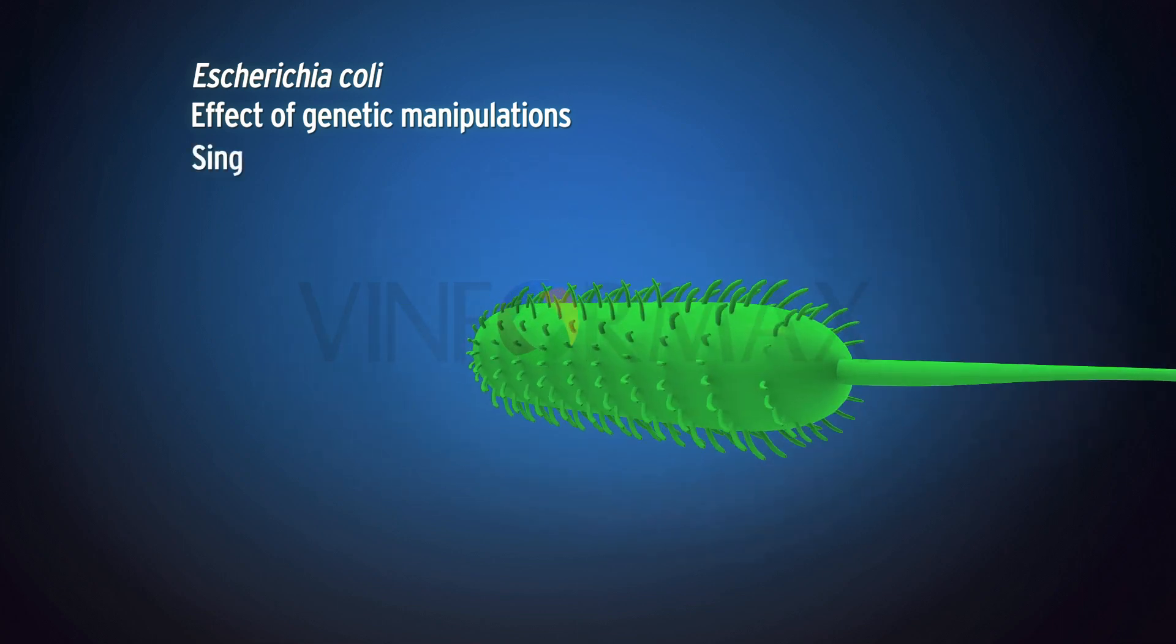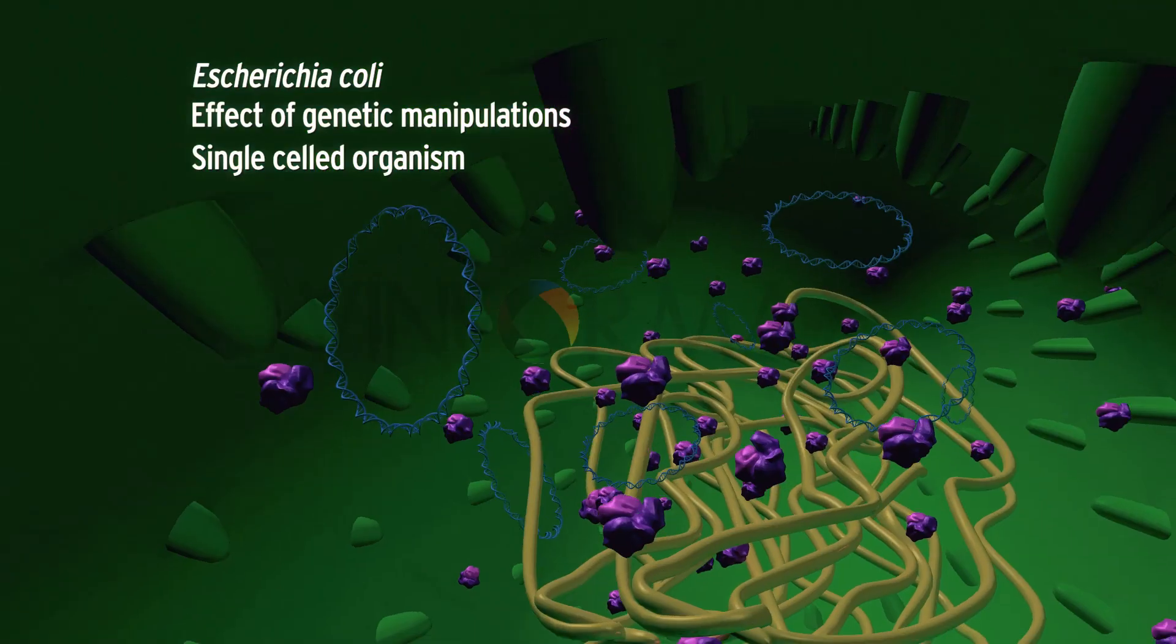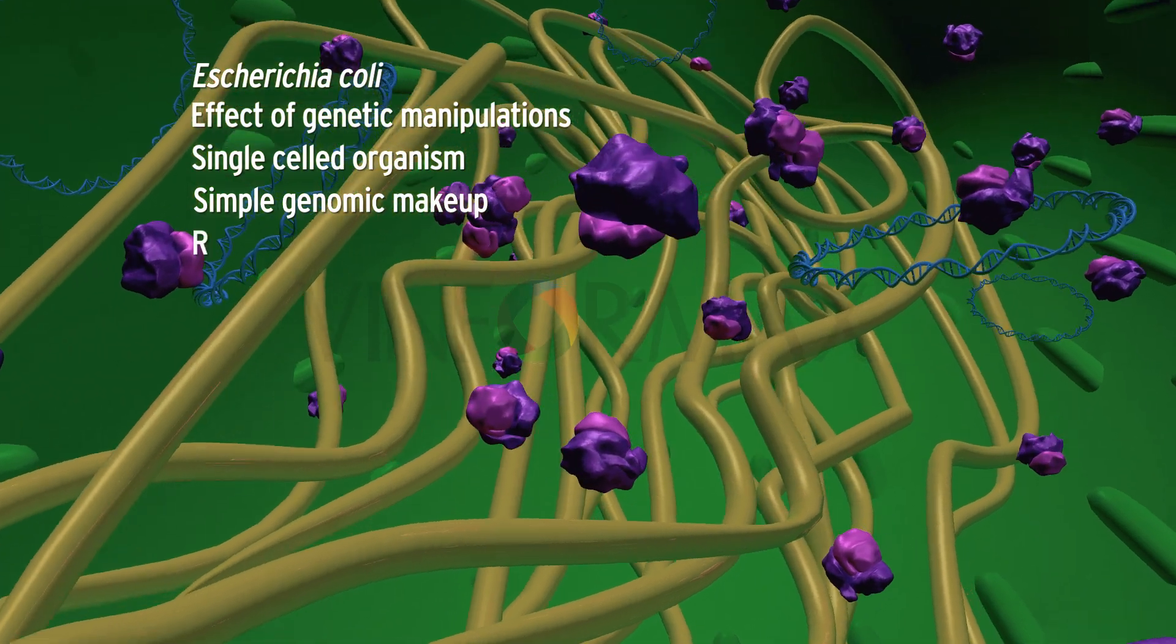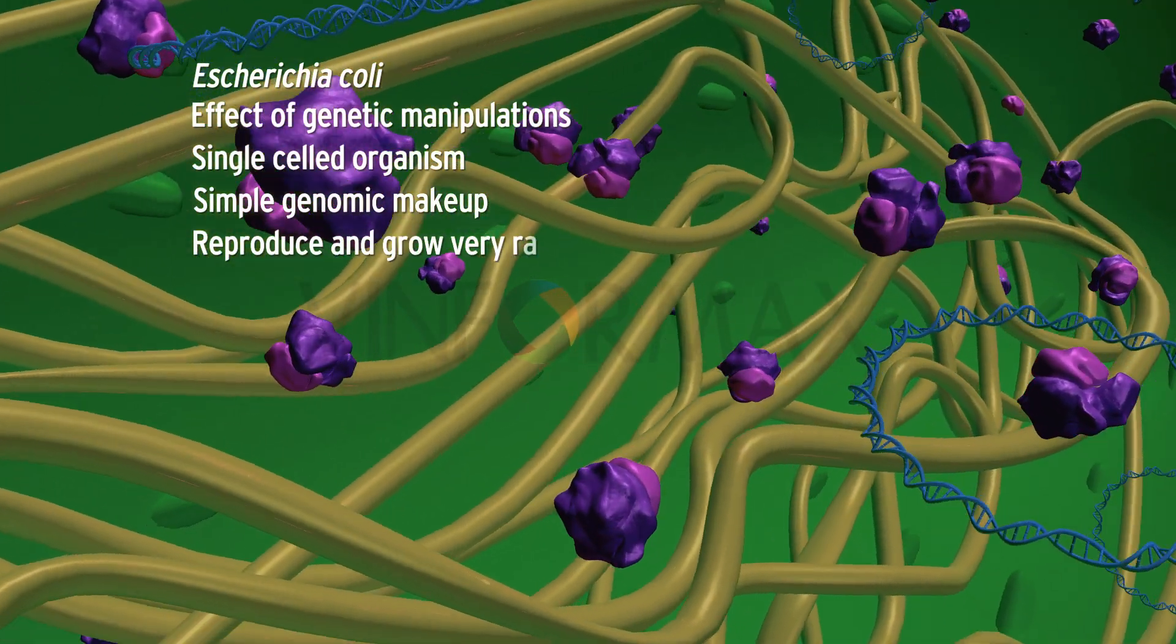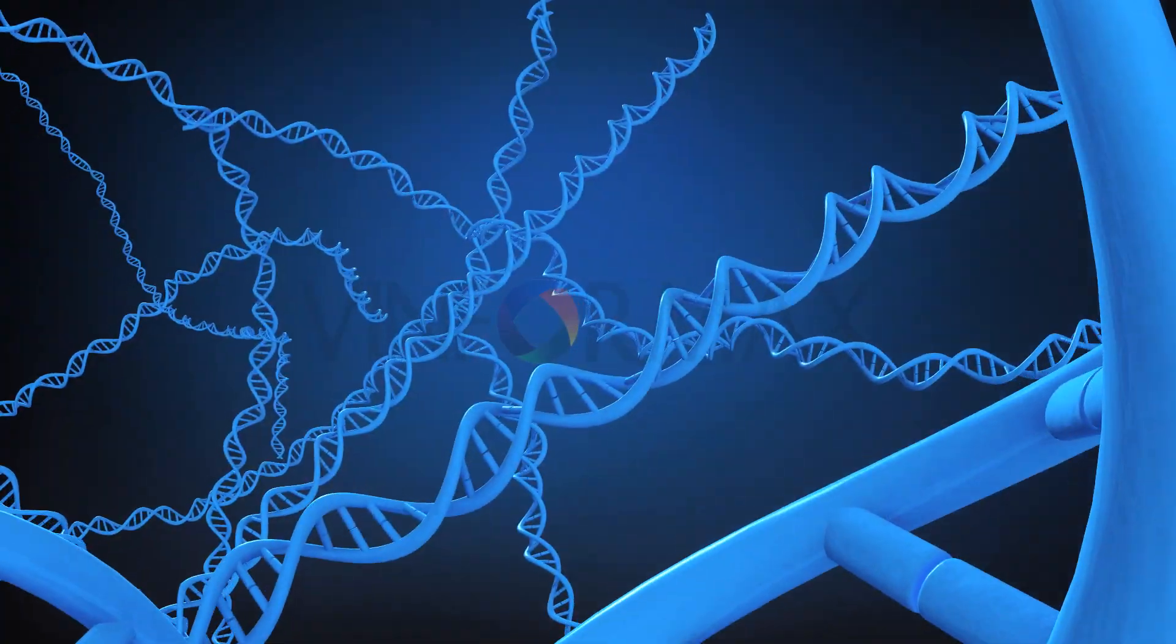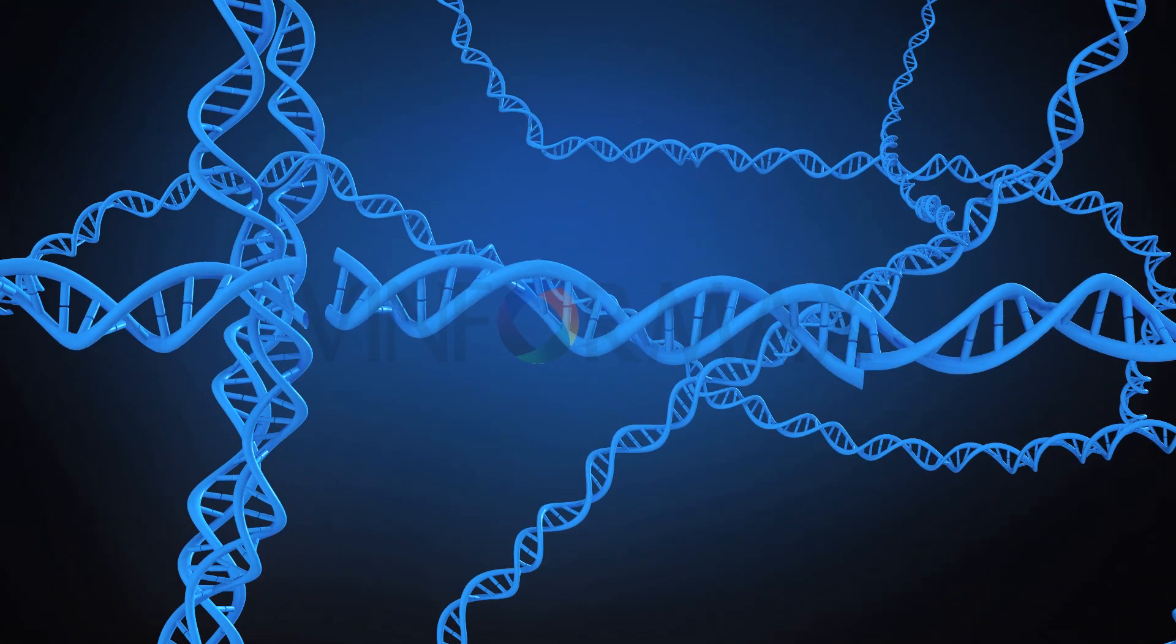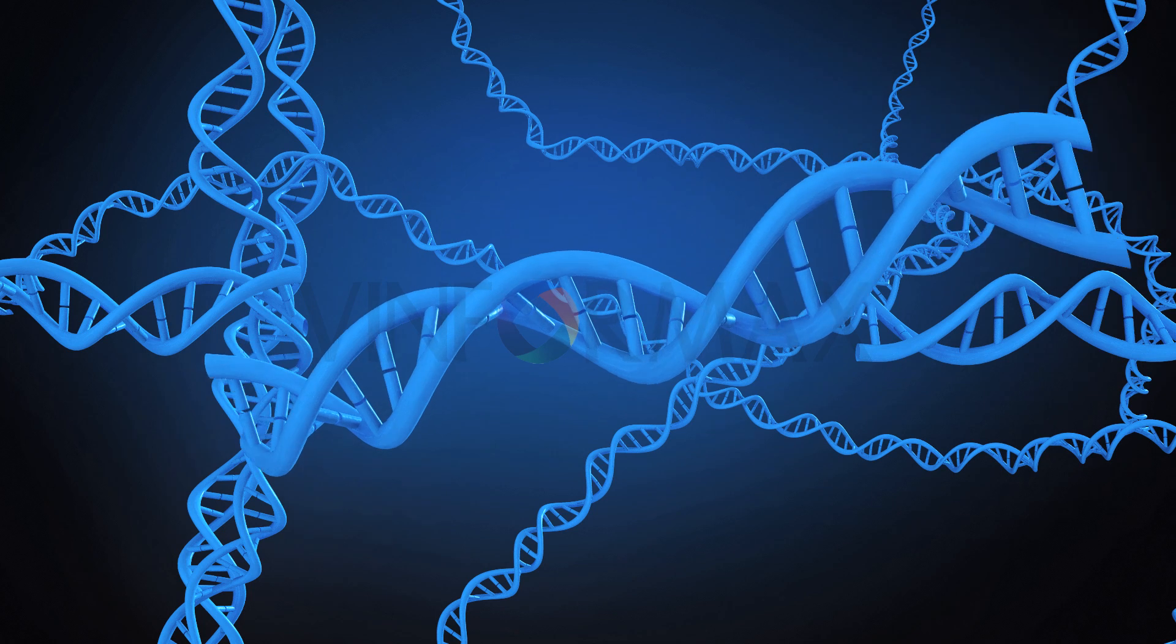Since it is a single-celled organism, it has a simple genomic makeup and can reproduce and grow very rapidly. This is the desired gene from a study organism. This gene is selectively removed from the genomic or plasmid DNA.